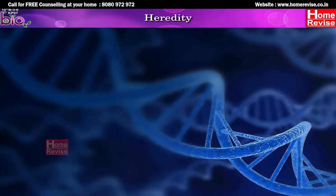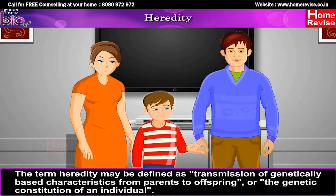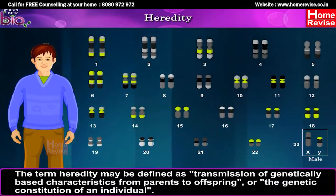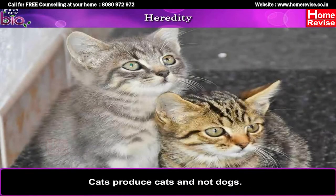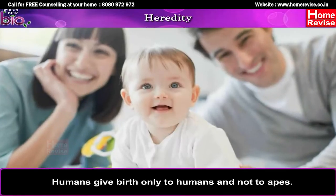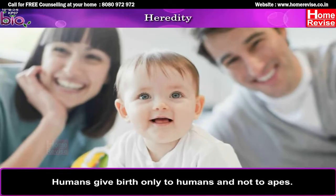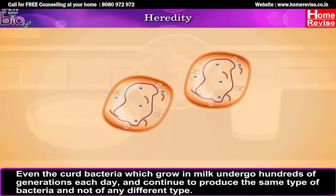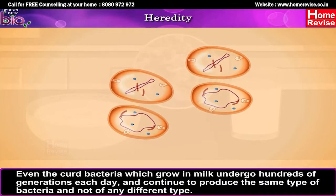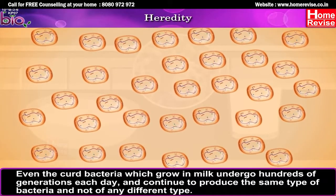Heredity may be defined as the transmission of genetically based characteristics from parents to offspring, or the genetic constitution of an individual. Cats produce cats and not dogs; a mango seed germinates into a mango tree; humans give birth only to humans and not to apes. Even the curd bacteria which grow in milk undergo hundreds of generations each day and continue to produce the same type of bacteria.